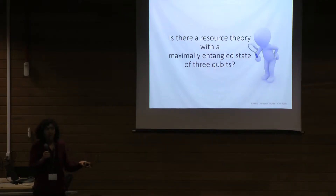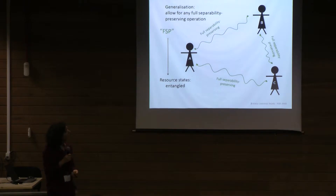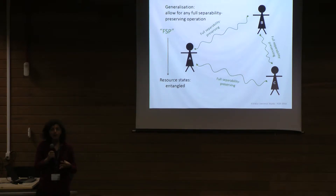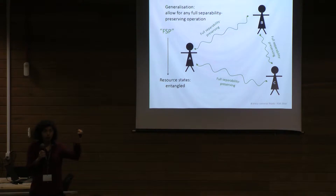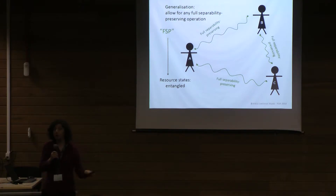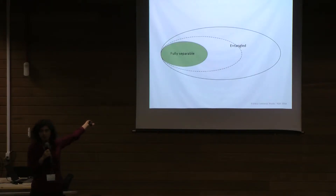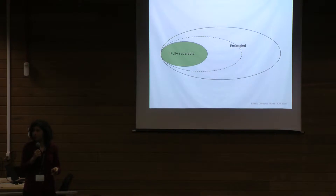Because there are two different types of entanglement, we're going to have two different classes of free states and hence two different classes of free operations. First, we start with full separability preserving operations, which are those that leave the set of fully separable states invariant. I'm not going to define my maps in any mathematical way — a map is allowed if on input a separable state it outputs a separable state. If you input a separable state and it outputs a non-separable state, it's not allowed. That's my only restriction.